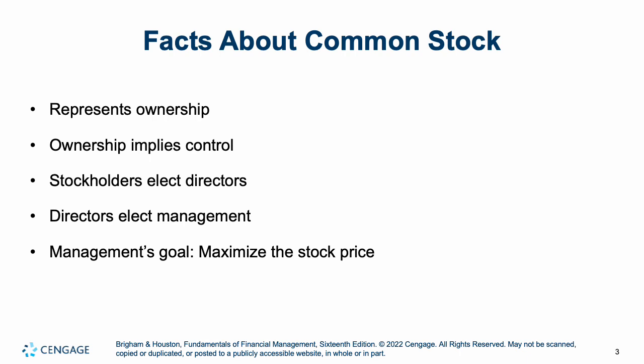So common stock — if you buy stock in a company, what does it do? It actually means you own a piece of that company. So if you own common stock in Apple, Microsoft, or Google, you own part of that company by owning its stock. And ownership implies control. If you own enough of the stock of a company, you actually have control over that company.